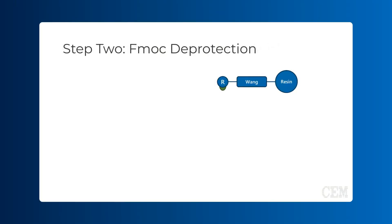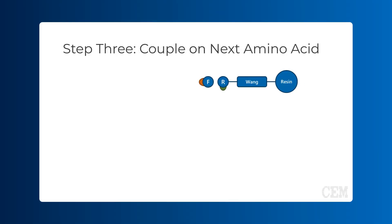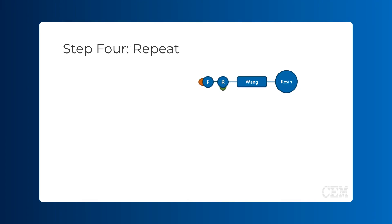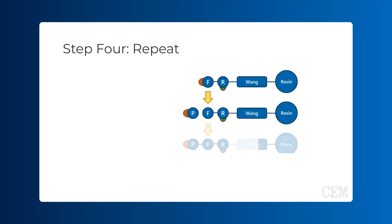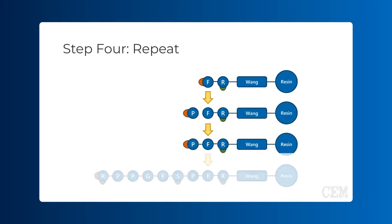Once the first amino acid is attached, the temporary Fmoc protecting group is removed to expose the free amine. The next amino acid, with its own protected amino group, is activated and coupled onto the growing chain. Steps 2 and 3 are repeated for each additional amino acid, extending the peptide chain.